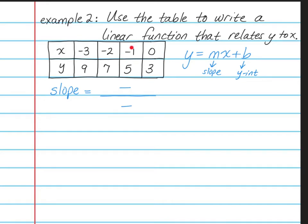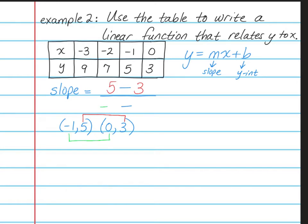For the sake of this lesson, I will use these two points: negative 1, 5 and 0, 3. It helps me if I write it in a form that I'm used to seeing. Remember that the top of your slope formula uses your Y numbers. So on the top, we're going to use 5 and 3. On the bottom, we're going to use our X numbers, so negative 1 and 0. Now let's simplify: 5 minus 3 on the top is 2. On the bottom, negative 1 minus 0 is negative 1. And that simplifies to negative 2.